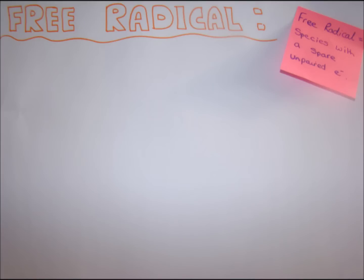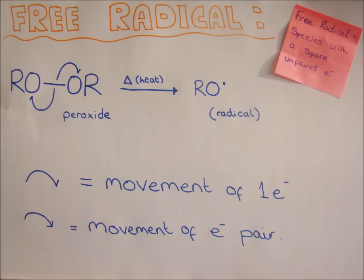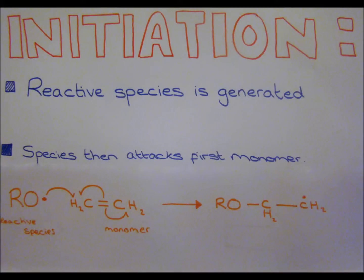Free radical polymerisation requires an initiator with an unpaired electron to open the alkene double bond homolytically. Peroxides are an ideal initiator as they are stable at room temperature but break down rapidly at the reaction temperature.